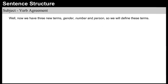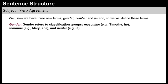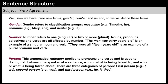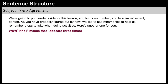Now we have three new terms to define: gender, number, and person. Gender refers to classification groups such as masculine, feminine, and neuter. Number refers to one (singular) or two or more (plural). Nouns, pronouns, adjectives, and verbs are all affected by number. 'The man was thirty years old' is an example of a singular noun and verb. 'They were all fifteen years old' is an example of a plural pronoun and verb. Person is a grammatical category that applies to pronouns and verbs and is used to distinguish between the speaker, who or what is being talked to, and who or what is being talked about. There are three categories: first person, second person, and third person. We'll set gender aside for this lesson and focus on number, and to a limited extent, person.